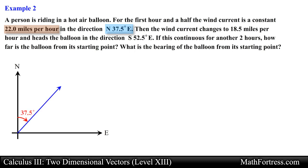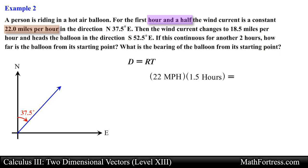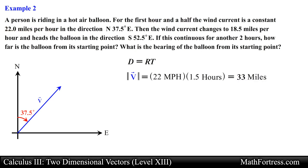We find the distance traveled in this direction using the distance equals rate times time formula. The balloon travels at 22 miles per hour for an hour and a half, giving us 33 miles. Let's label this vector as vector v. Then the balloon changes direction to a bearing of 52.5 degrees east of south, so we draw the cardinal directions on the head of the first vector.